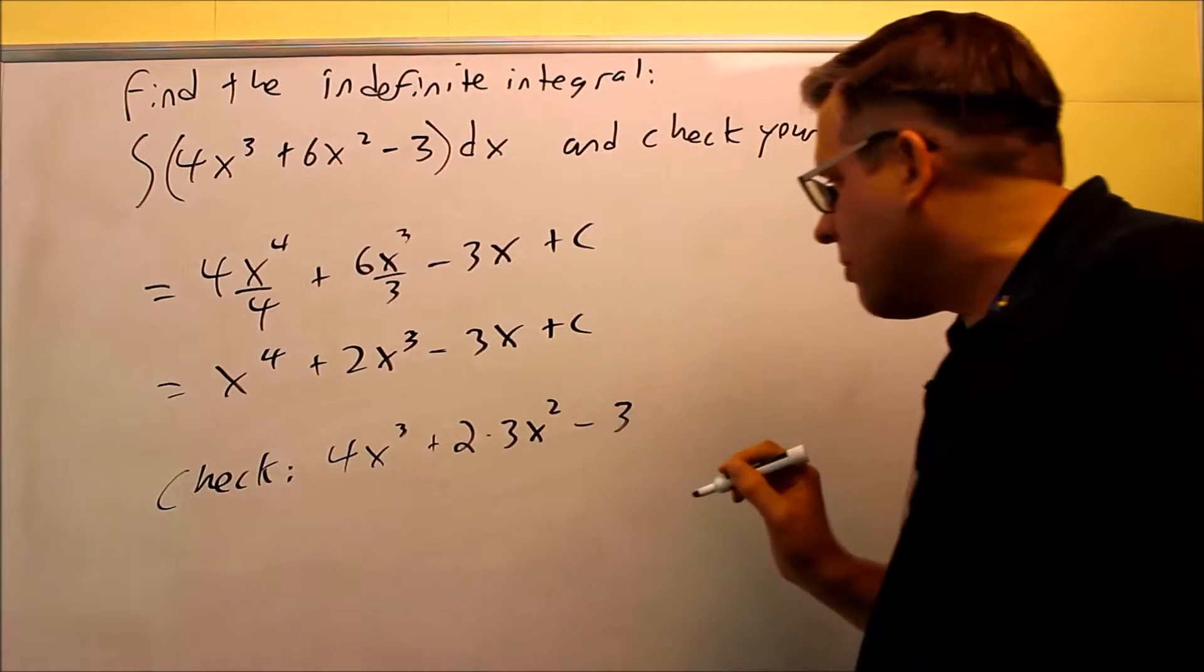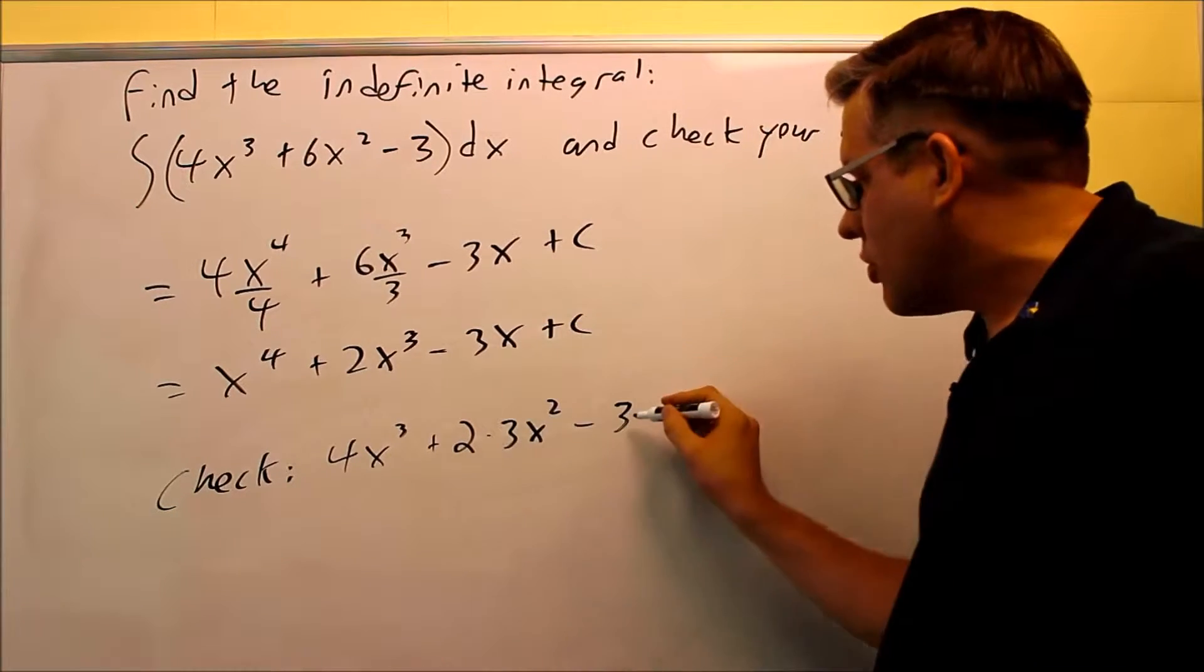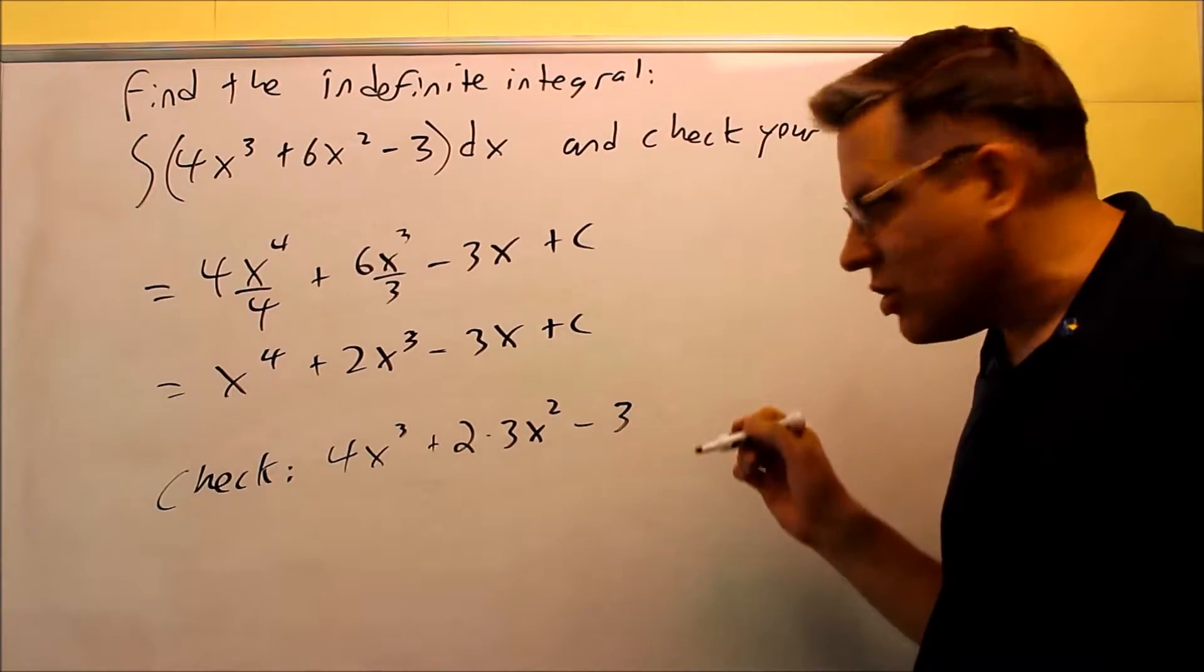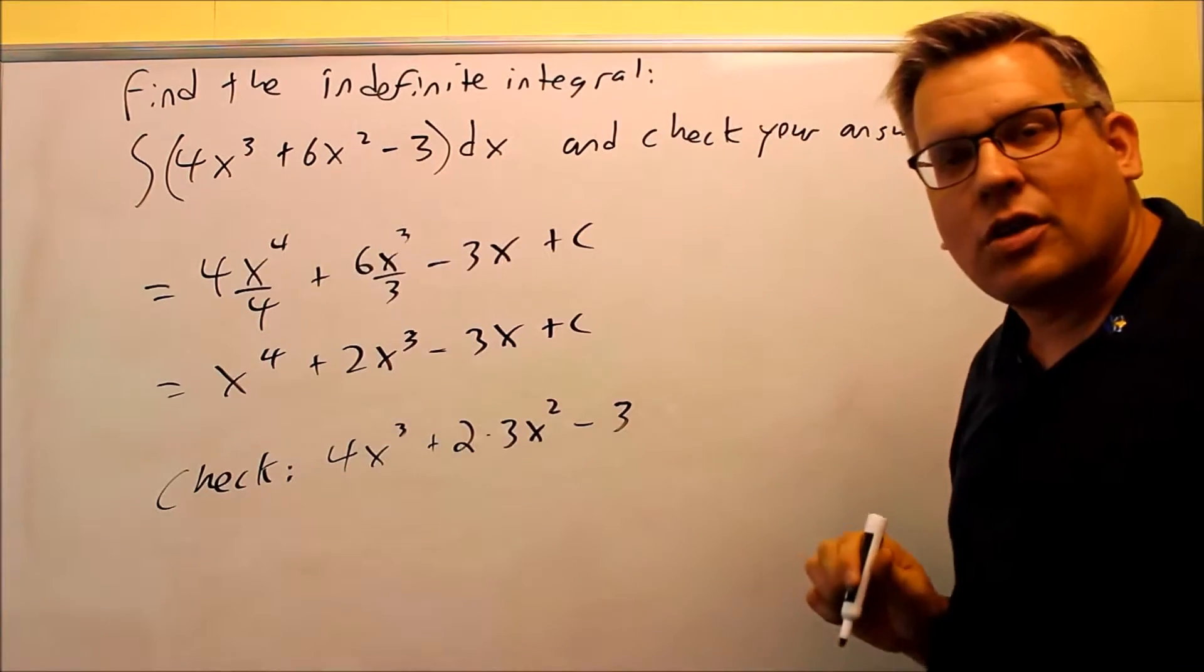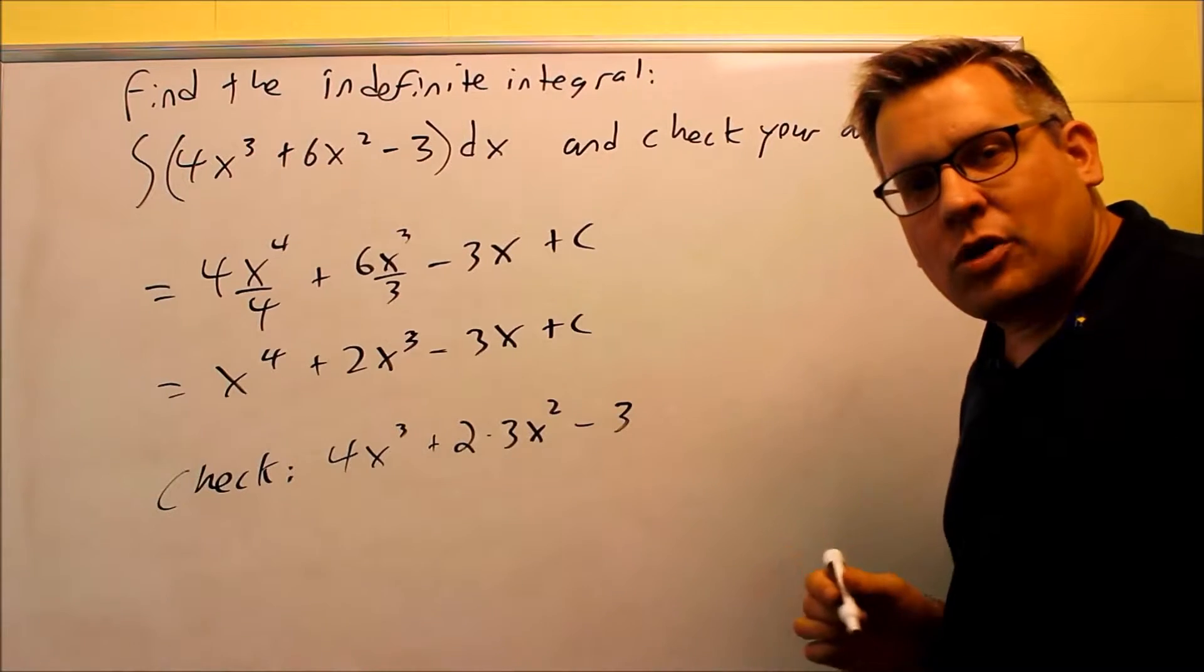If I have a minus 3 when x next to it turns into minus 3, derivative of c is 0. Notice, if I simplify this, I will get exactly the same thing I started with inside the integral sign, so then I know it's going to be correct.